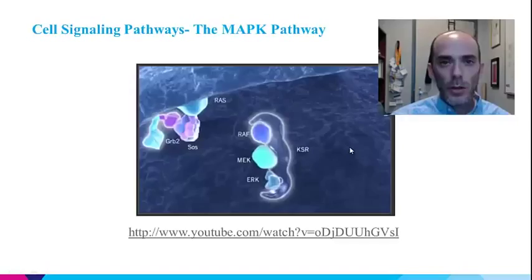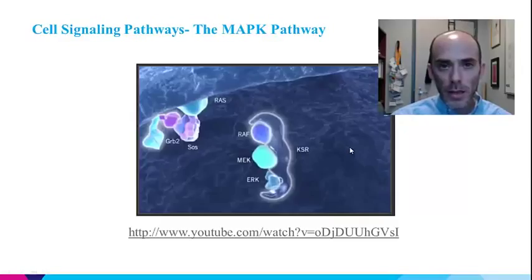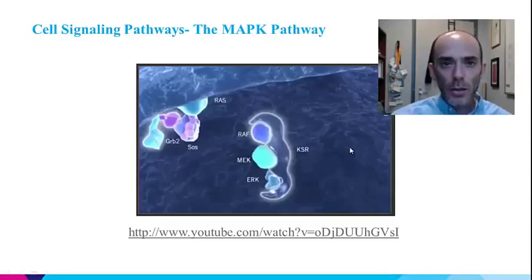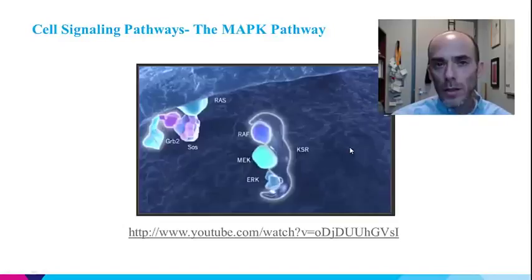Some of the systems we're going to discuss is the cell signaling network that takes information from the environment and passes — transduces — that information into the cell through cell signaling pathways, such as the MAP kinase pathway that we're just going to watch. Those signals form a network, informing the cell of the status of the environment and helping the cell make the final phenotypic decision.